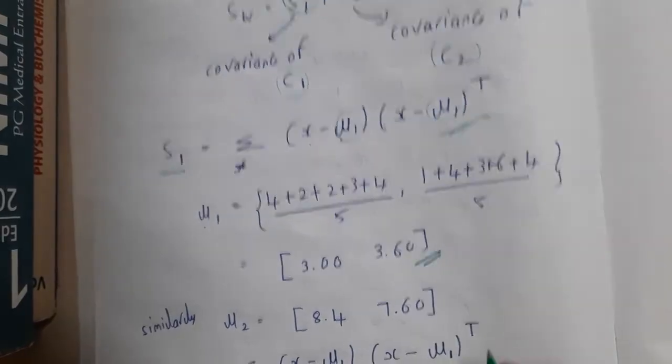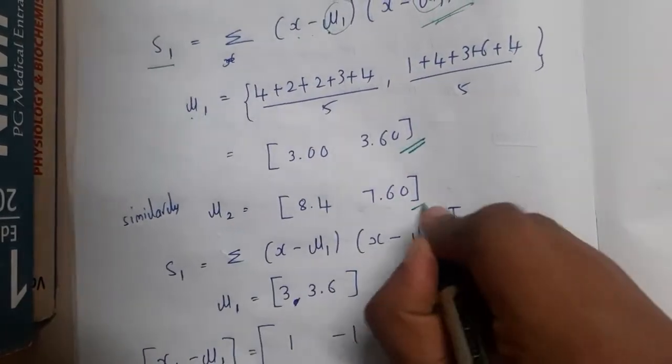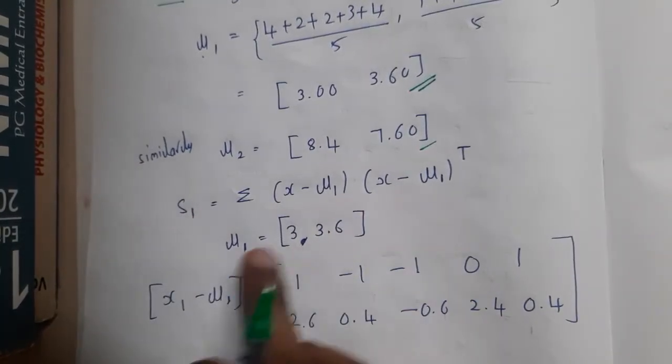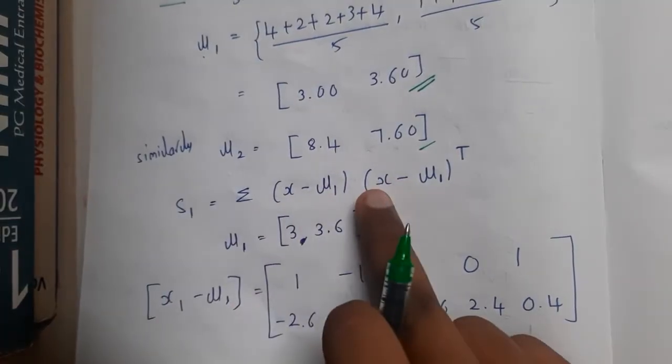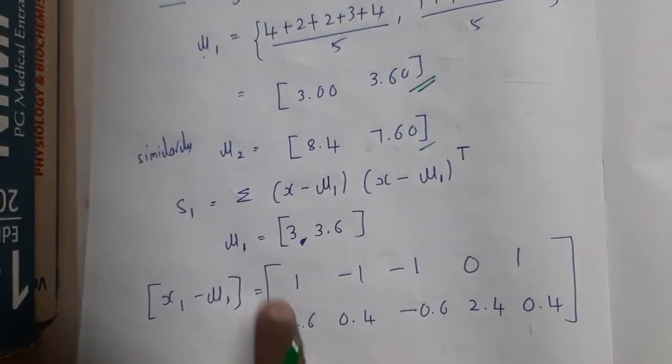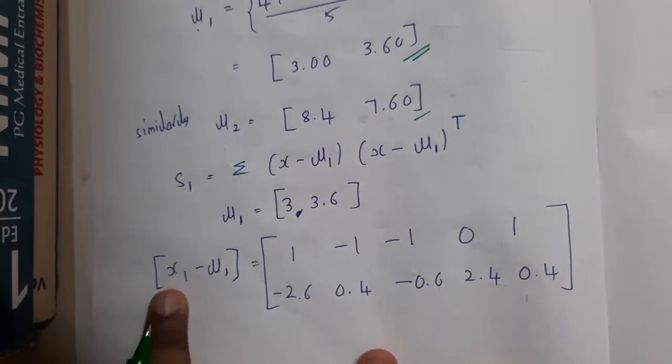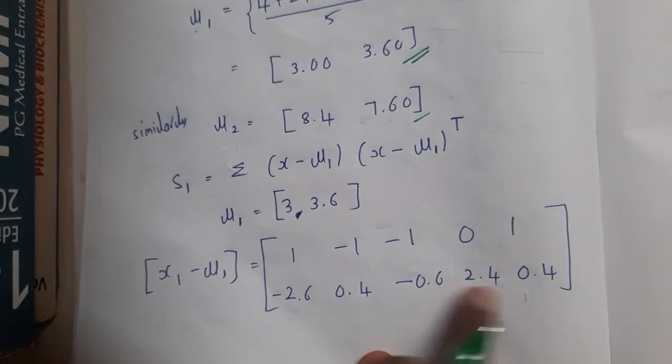We got two-by-two matrix in the matrix format. We got x and y. Similarly, you will be calculating for μ2 also. You got x and y. Now you will be starting the transpose and multiplying them. S1 equals sigma (x - μ1)(x - μ1)^T. Here we wrote μ1's value and wrote x minus μ1. We wrote the values in this way.